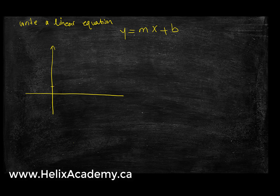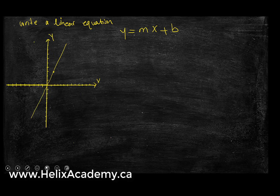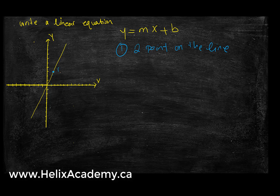Let's look at the line here — we're trying to write an equation for this line. There are a few steps to do this. The first step is to find two points on this line. I'm going to pick one point at x equals 1 and y equals 3, and it also crosses the origin, so I have 0 and 0. I need two points on the line. Then the second step is to find m, and the last step is to find b.